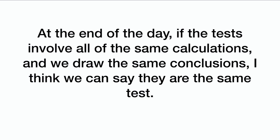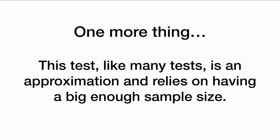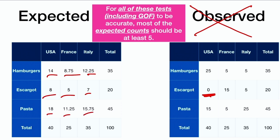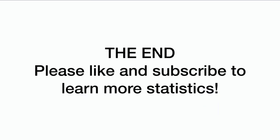If you're taking a statistics class and your teacher wants you to differentiate between these — or if you're taking the AP Stats exam — call them what the book wants you to call them. One more thing: this test, like many tests, is an approximation that relies on having a big enough sample size. For all of these tests, including the goodness-of-fit test, to be accurate, most of the expected counts should be at least 5. It does not matter what the observed counts are — you can have zeros — but most expected counts should be at least 5.